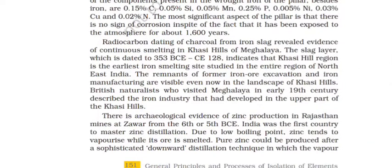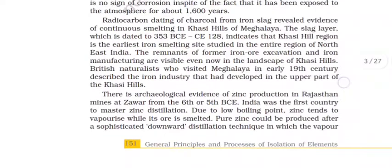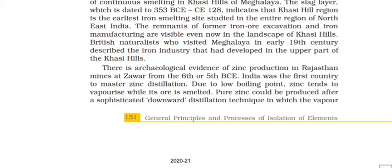Radiocarbon dating of charcoal from iron slag revealed evidence of continuous smelting in Khasi Hills of Meghalaya. The slag layer which is dated to 353 BCE to CE 128 indicates that Khasi Hill region is the earliest iron smelting site studied in the entire region of North East India. The remnants of former iron ore excavation and iron manufacturing are visible even now in the landscape of Khasi Hills. British naturalists who visited Meghalaya in early 19th century described the iron industry had developed in the upper part of the Khasi Hills.